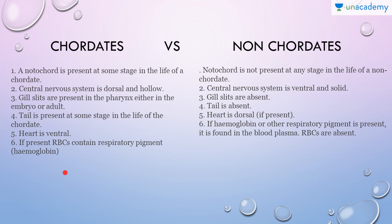RBCs are present in chordates and absent in non-chordates. In chordates, the RBCs contain the respiratory pigment hemoglobin. In non-chordates, if any respiratory pigment is present — hemoglobin or others like cyanoglobin — those pigments are present inside the plasma, because non-chordates do not have RBCs.